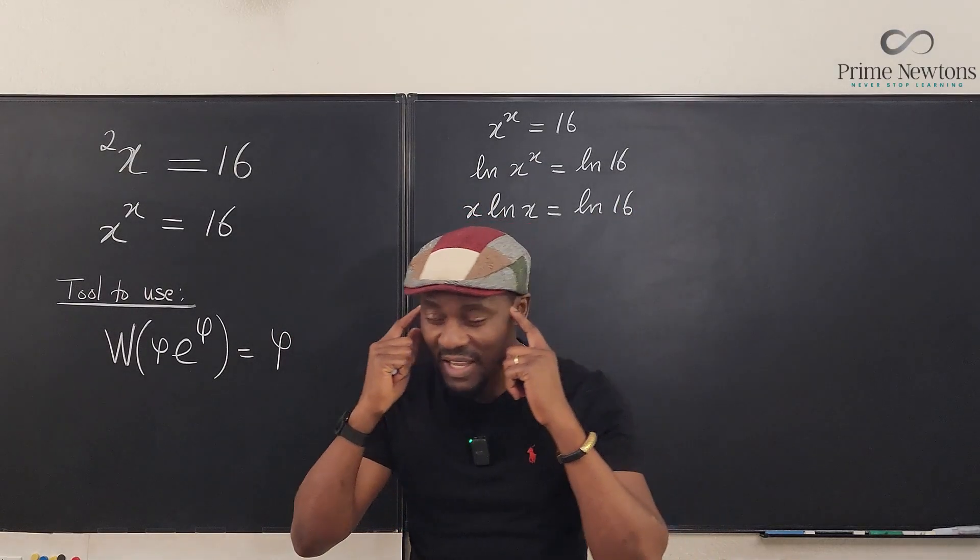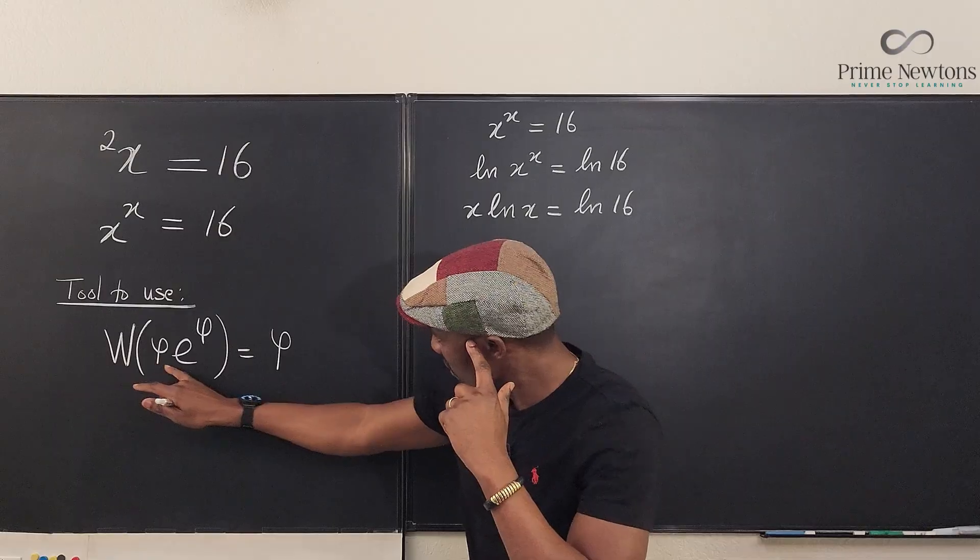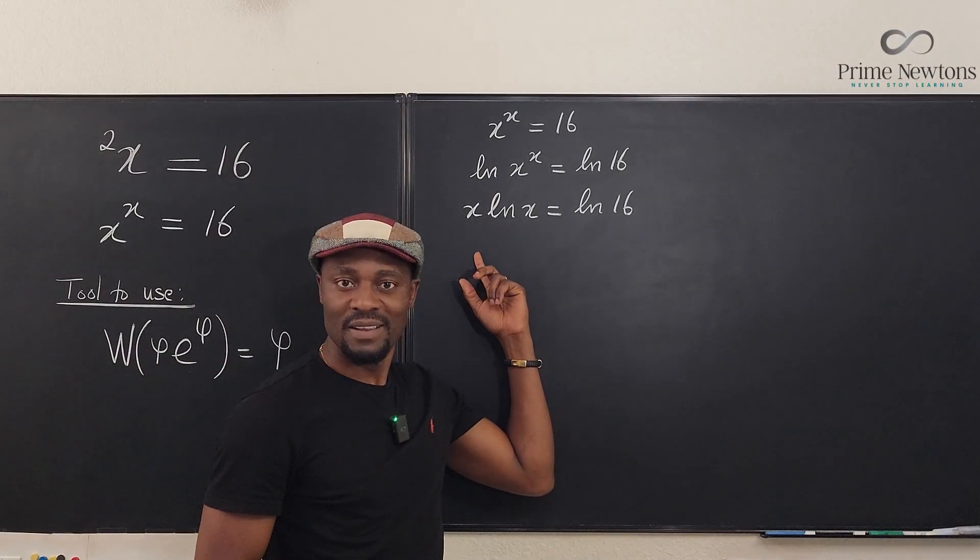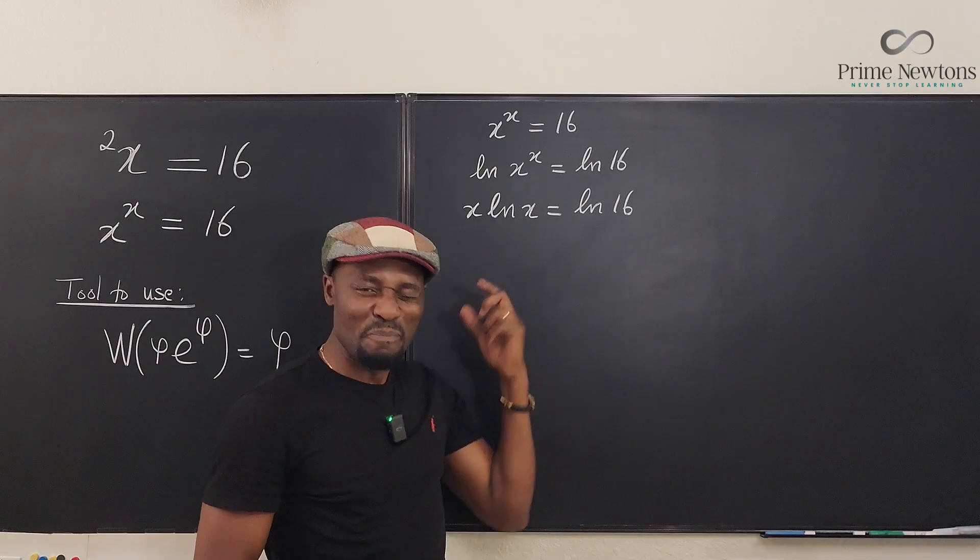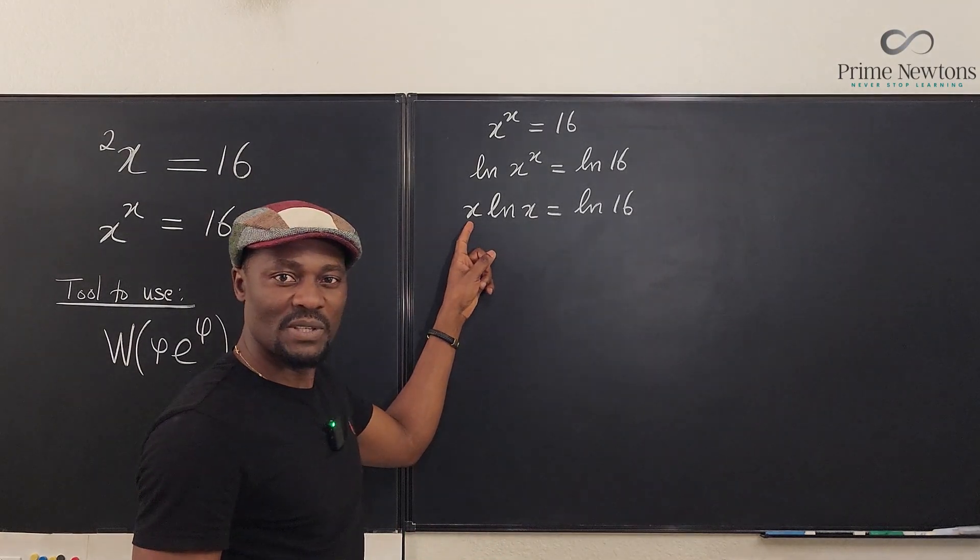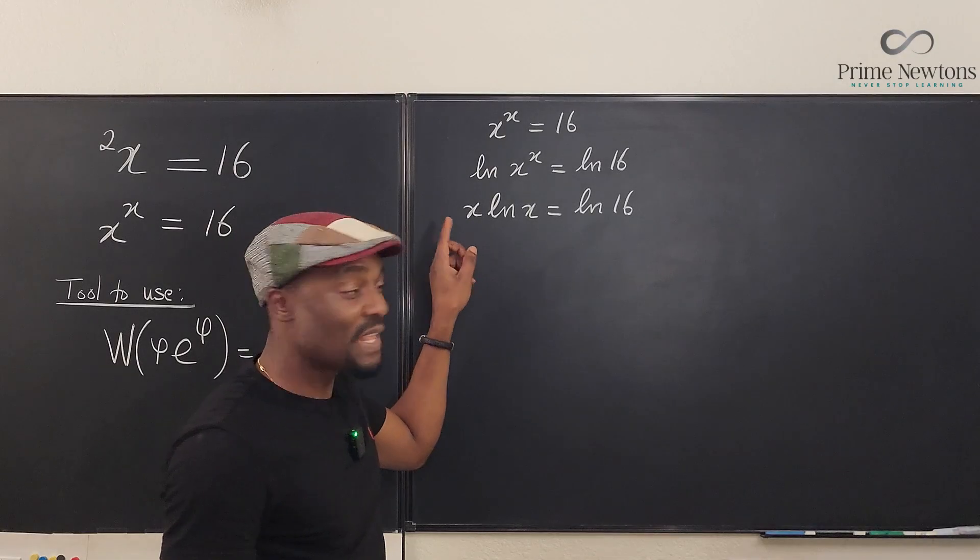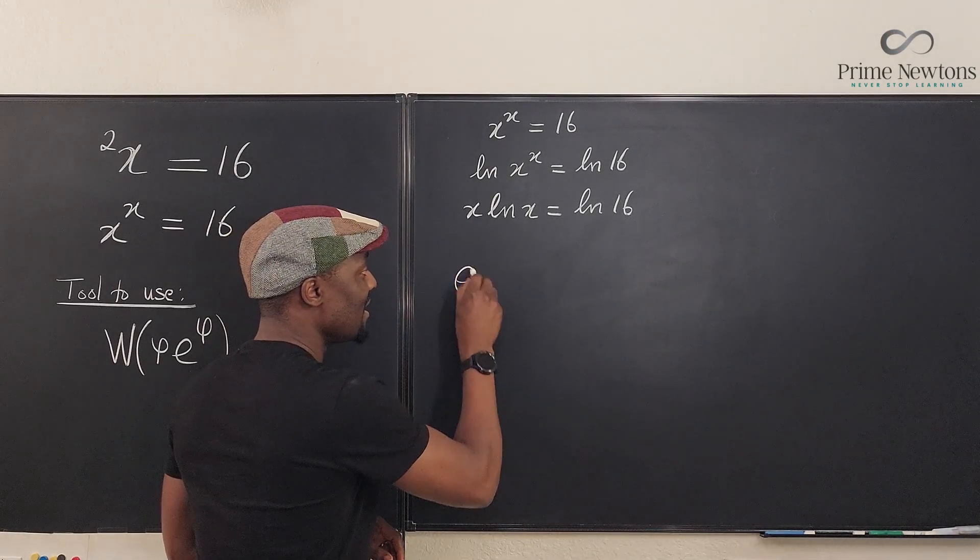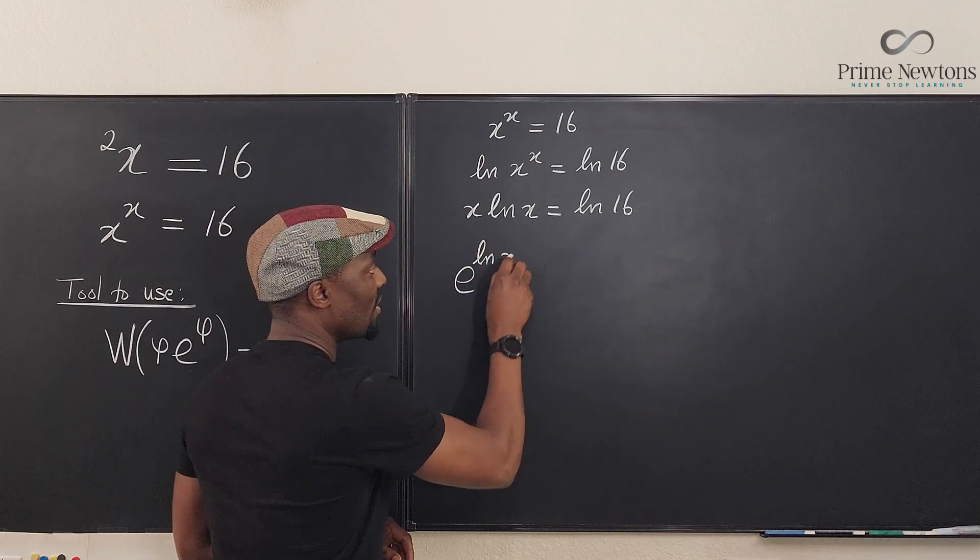So you have to start thinking, I need it to look like this, but there is no e here. I need to make something e. Let's focus on this x. I know that x can be written as e to the natural log of x.